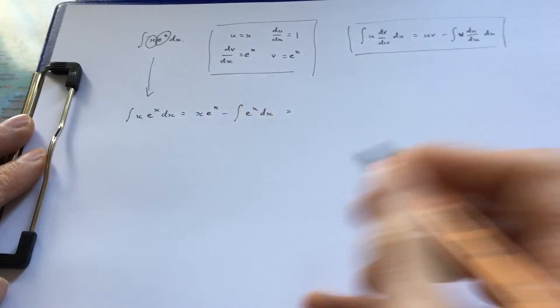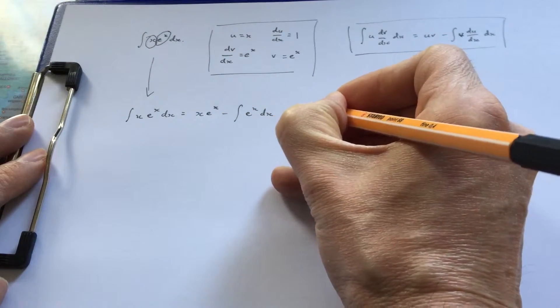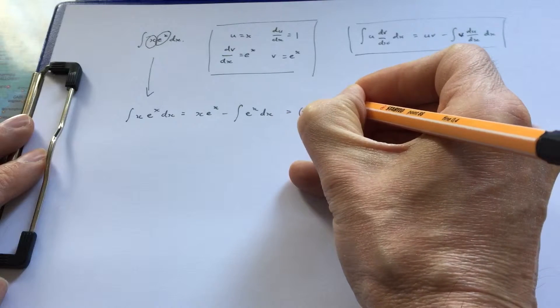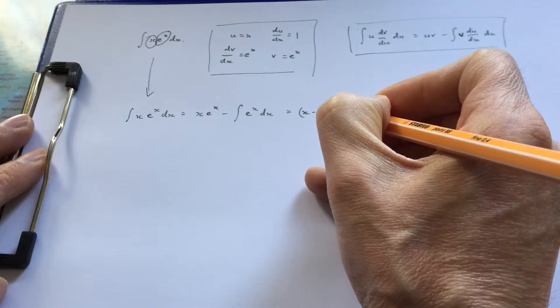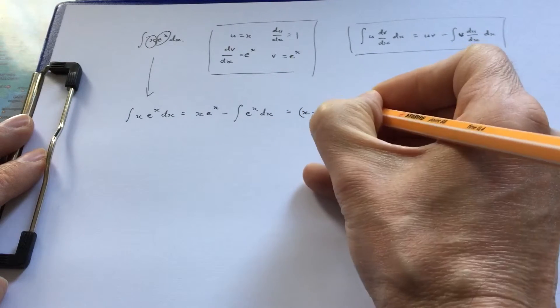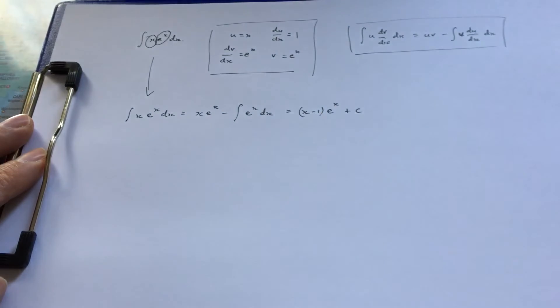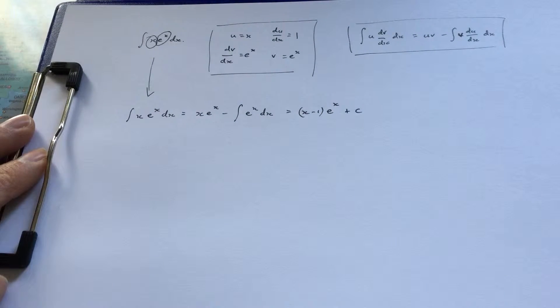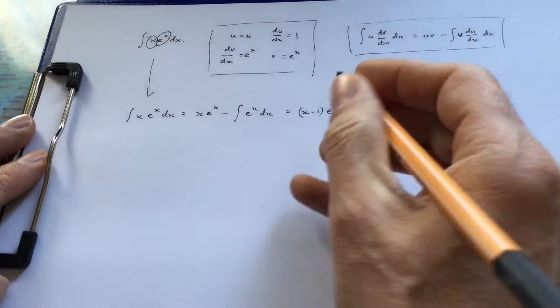The integral of e^x is e^x, so I end up with (x - 1)e^x. I should add the constant of integration. So there's my answer.